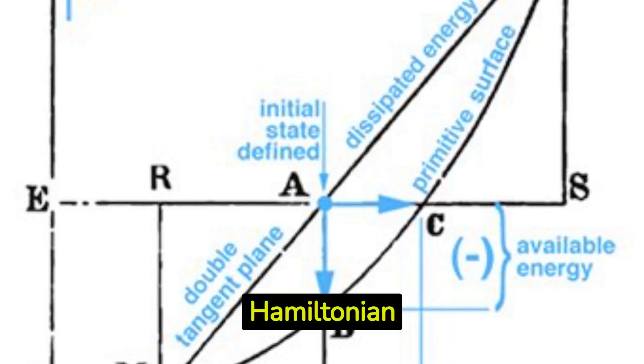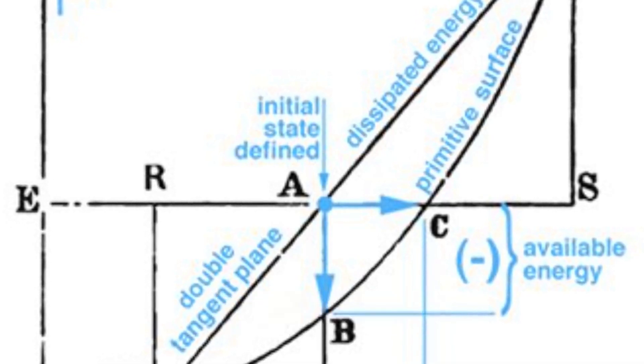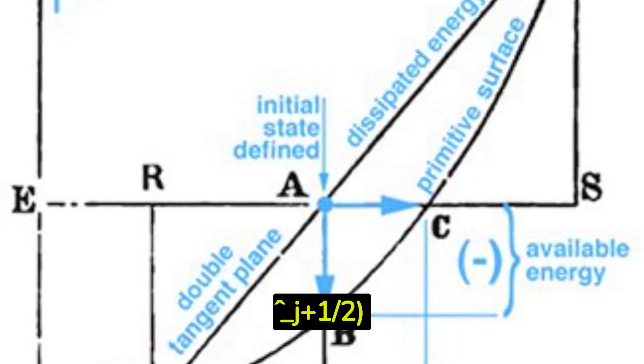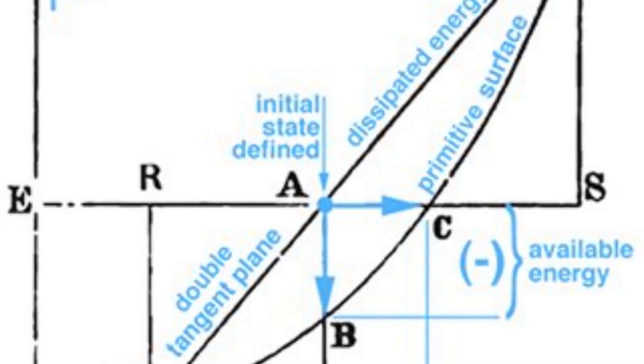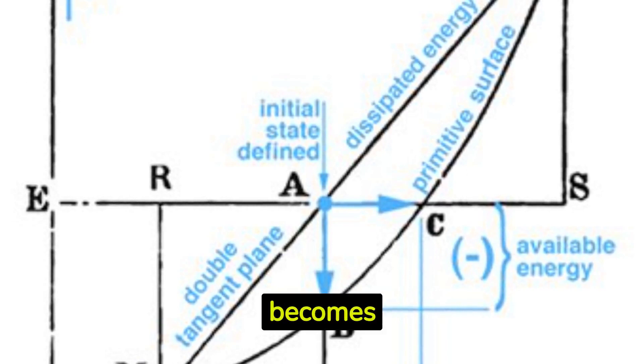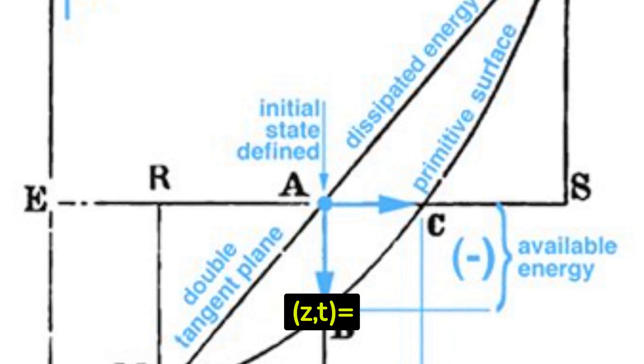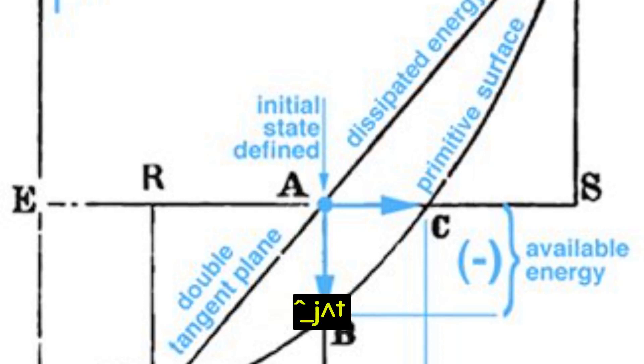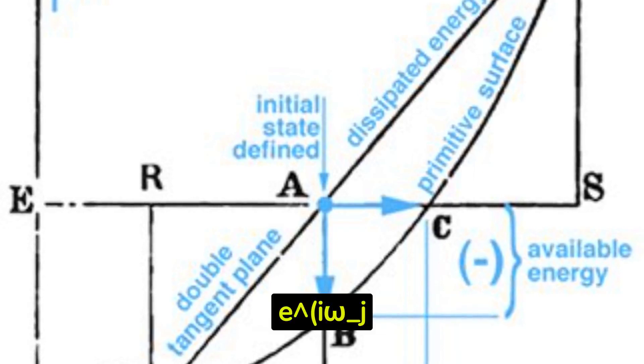The Hamiltonian of the EM field is H equals sigma underscore J H omega underscore J underscore J caret A underscore J plus 1 slash 2. The electric and magnetic field becomes epsilon underscore chi Z T equals sigma underscore J H omega underscore J forward slash epsilon underscore omicron V one half A underscore J E carat I omega underscore J T plus A underscore J caret E caret I omega underscore J T sin K underscore J Z.